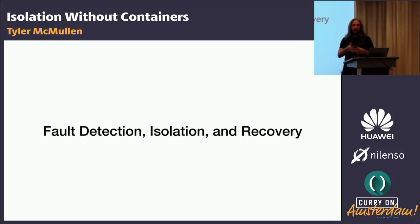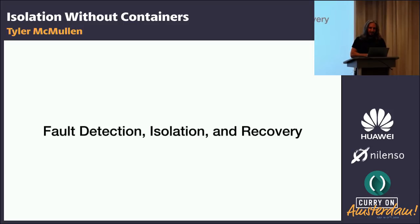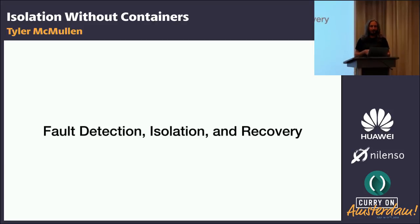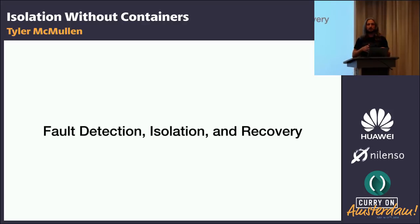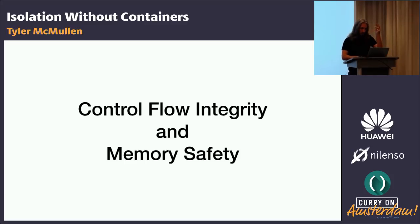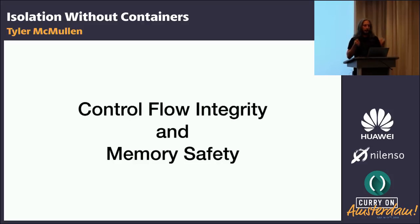Detection implies being able to tell when a fault has occurred reliably — you need to know when something has gone wrong, which is less trivial than it might seem. Isolation in our world means being able to prove that when a fault does occur, its blast radius is limited and known — we know what can possibly blow up. Recovery means being able to ensure that execution can be restarted and the system can continue, oblivious to whatever failure has occurred. In a computer program, most of this comes down to control flow integrity and memory safety.